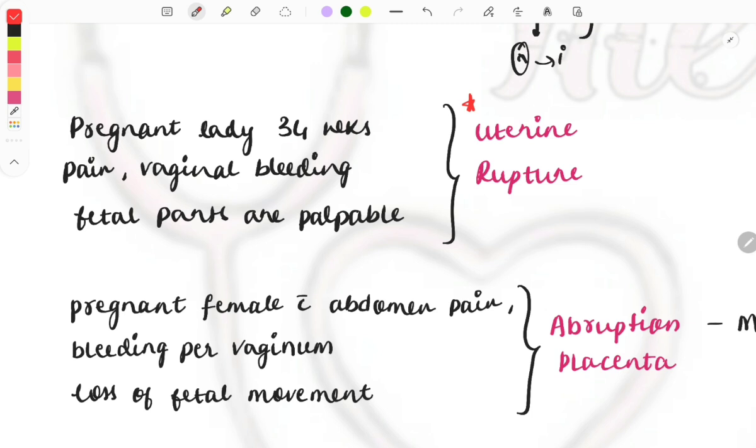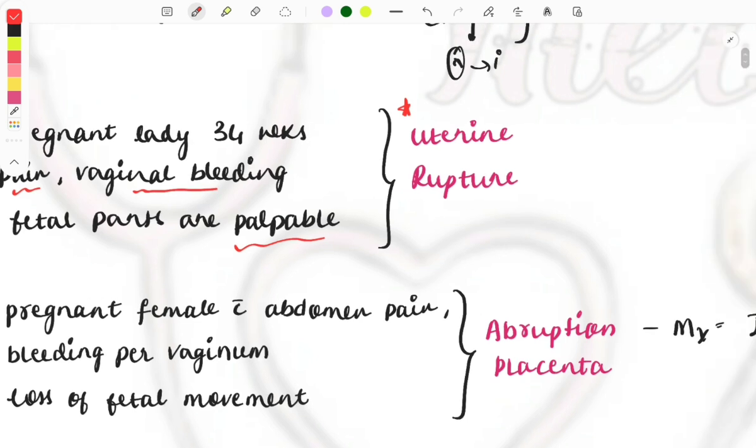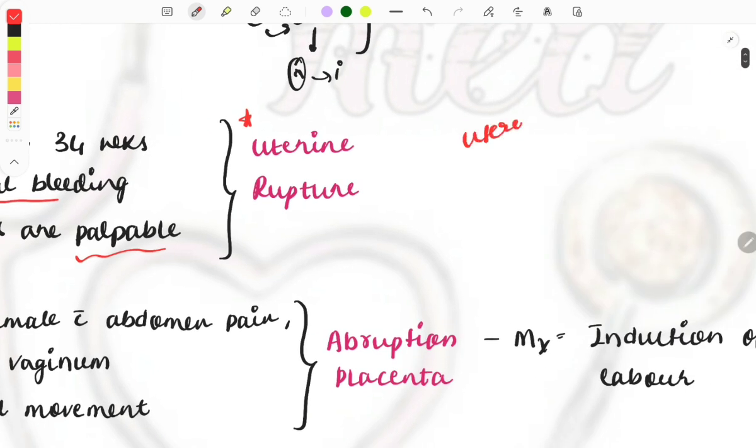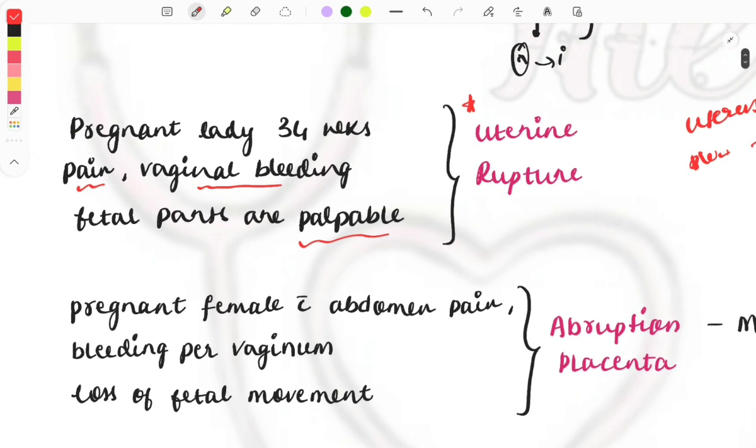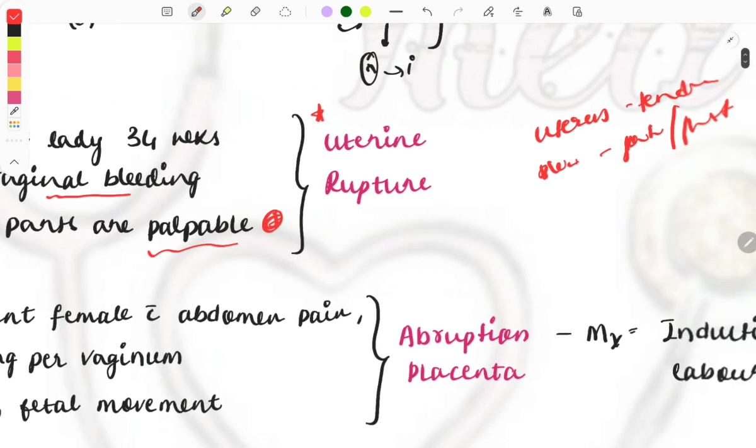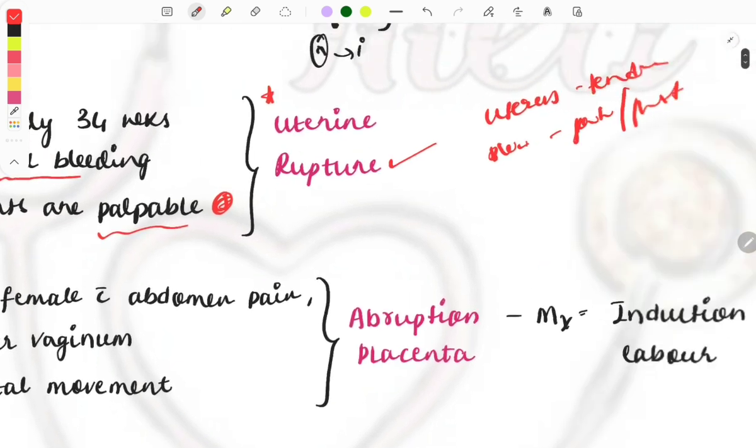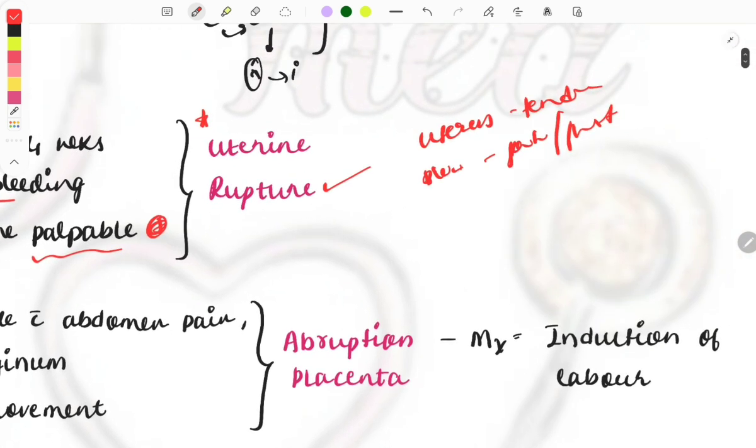Moving on to another very important and frequently asked repeat topic: a pregnant female at 34 weeks comes with pain, vaginal bleeding, and fetal parts are palpable. You need to look at three hint words given in the question. First, look at the uterus - is it tender or painful? Then look at the bleeding - whether it is painful or not. Then look at other things described in the question.